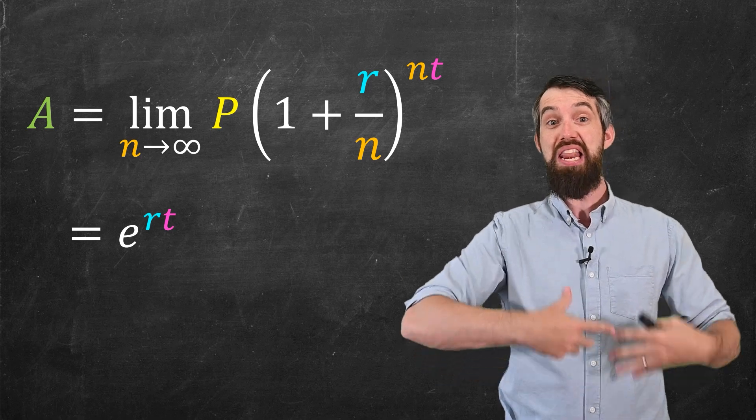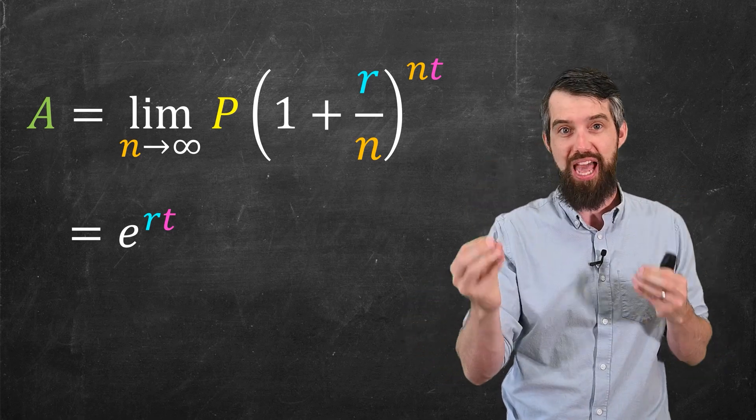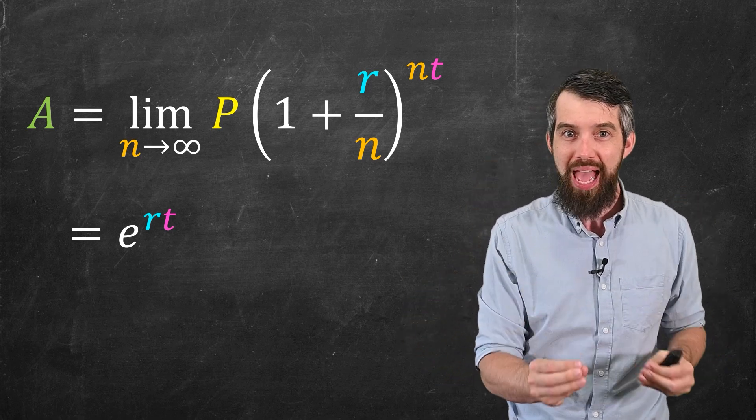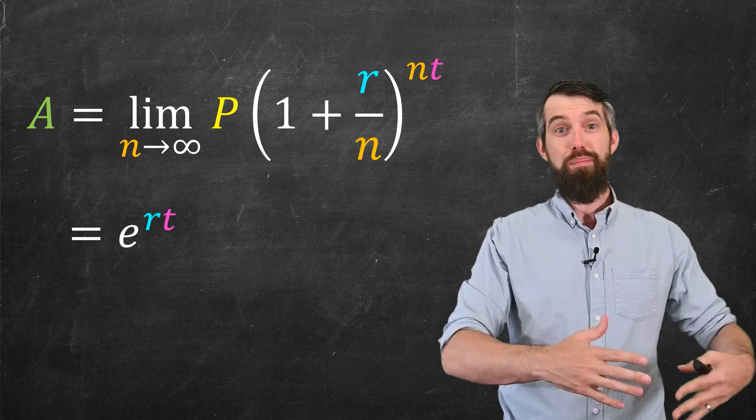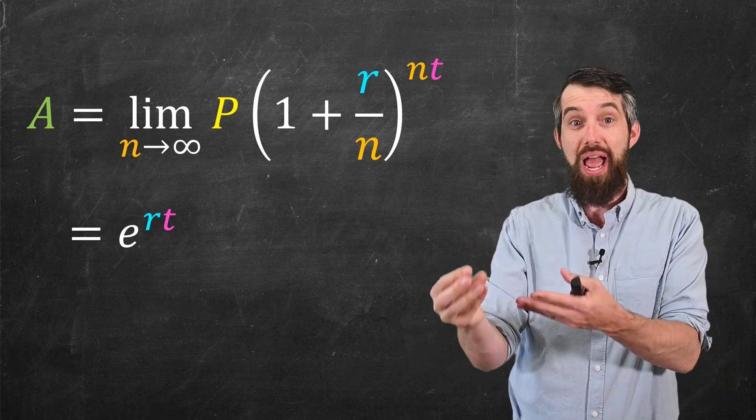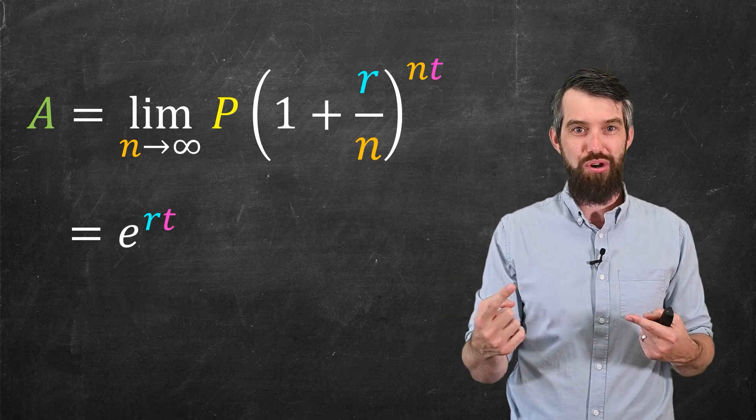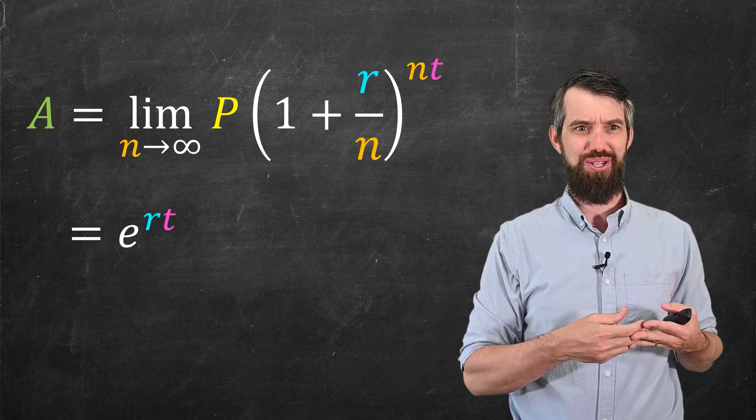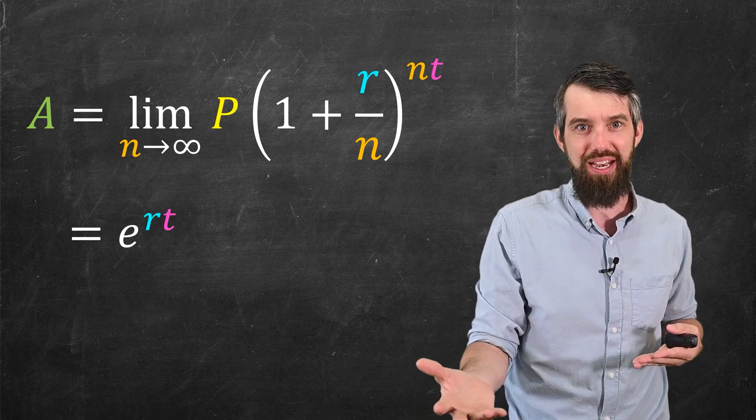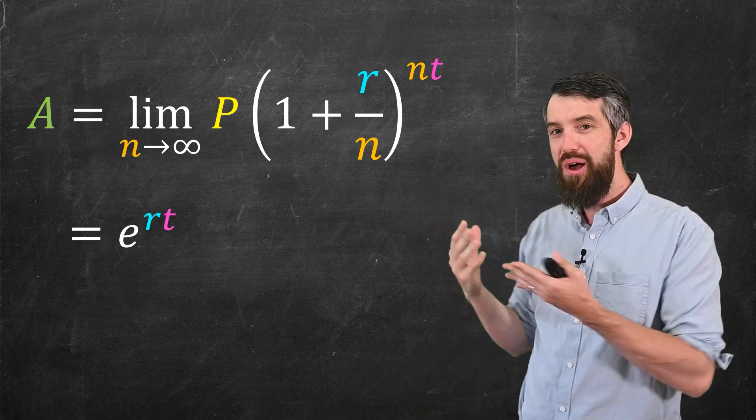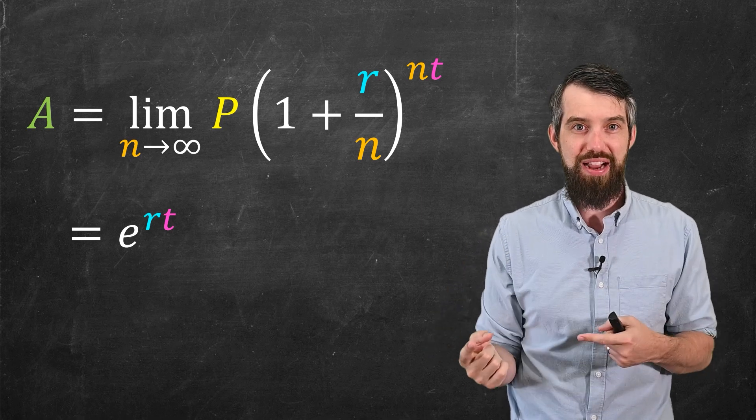And that's really nice because it means that you could just take your money out at any given moment and this would tell you exactly how much it was. And better yet, this is always the most that you could ever get if you're applying this same interest rate. As in, because we're compounding sort of always, if you wish, and we're compounding infinitely often,